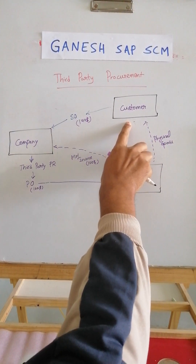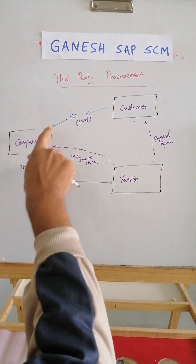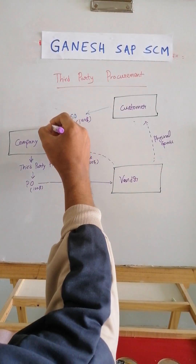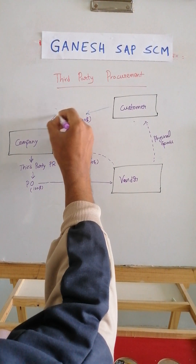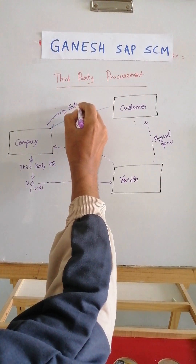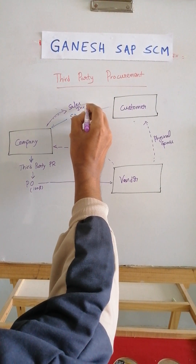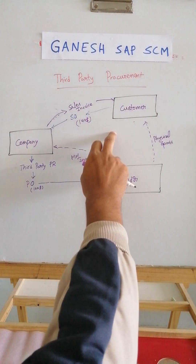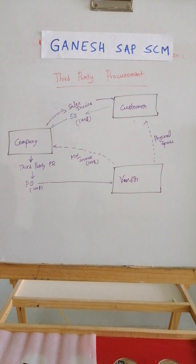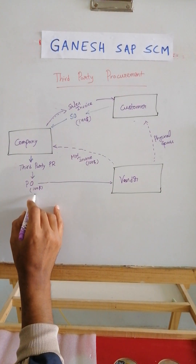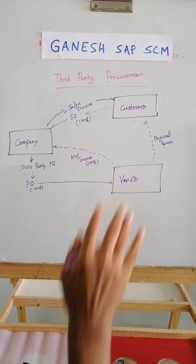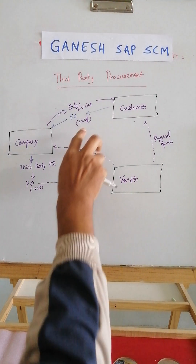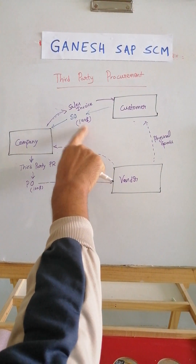The purchase order is created for $100, the invoice comes from the vendor to the company for $100, and physical goods are sent to the customer. The customer requested the stock from the company and received it. The company will then send a sales invoice to the customer, and the customer will pay $140 according to that invoice. You are buying for $100, spending maybe $10 to $15 on procurement and handling, so the remaining $25 is your profit.